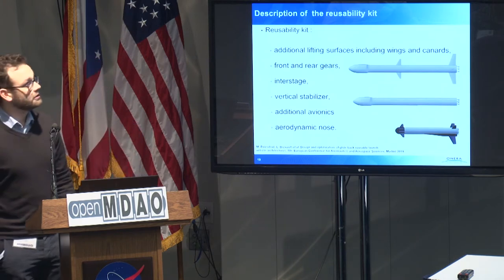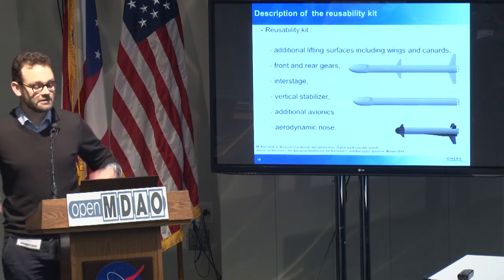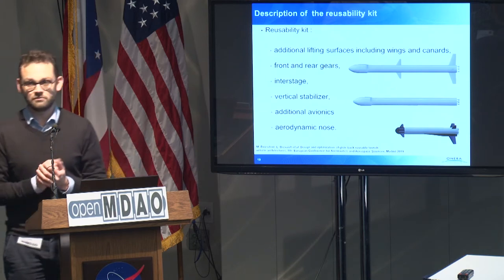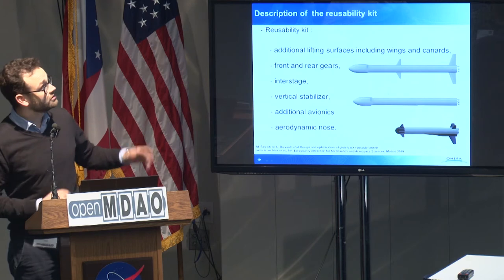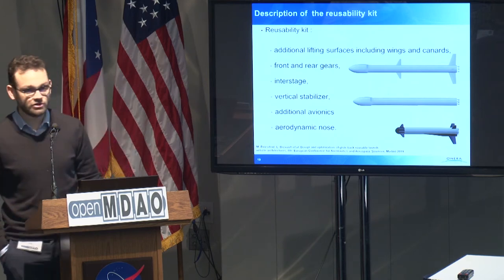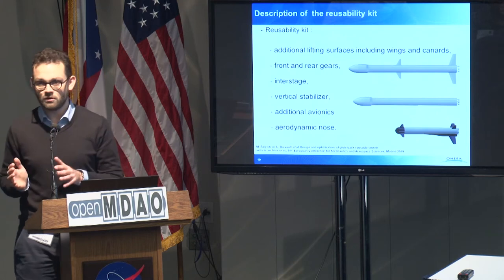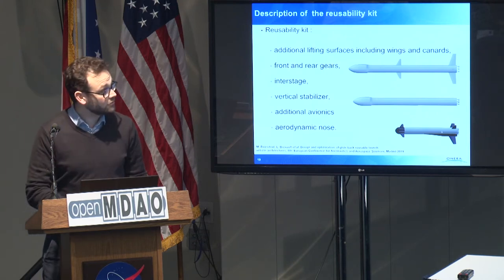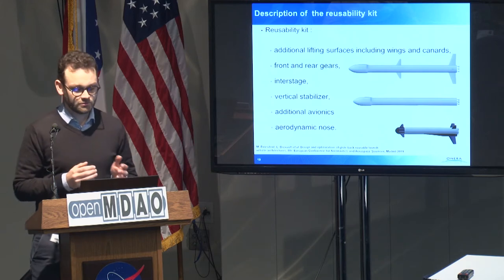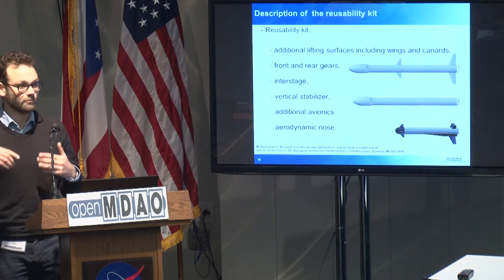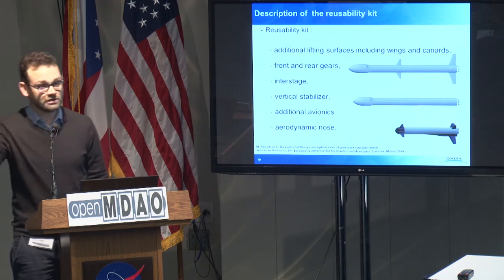With CNES, we looked at what we call a reusability kit for launch vehicle design. A reusability kit is a set of elements that can be mounted on the classical first stage of a launch vehicle to provide it with reusability capability. It is composed of additional lifting surfaces including wings and canards, landing gears, interstage, and so on. The philosophy is to be able to use the first stage in both reusable or expendable mode. For the first mission, we mount the reusability kit and perform a reusable flight. For the last flight, we unmount the reusability kit and the launch vehicle performs an expendable flight.